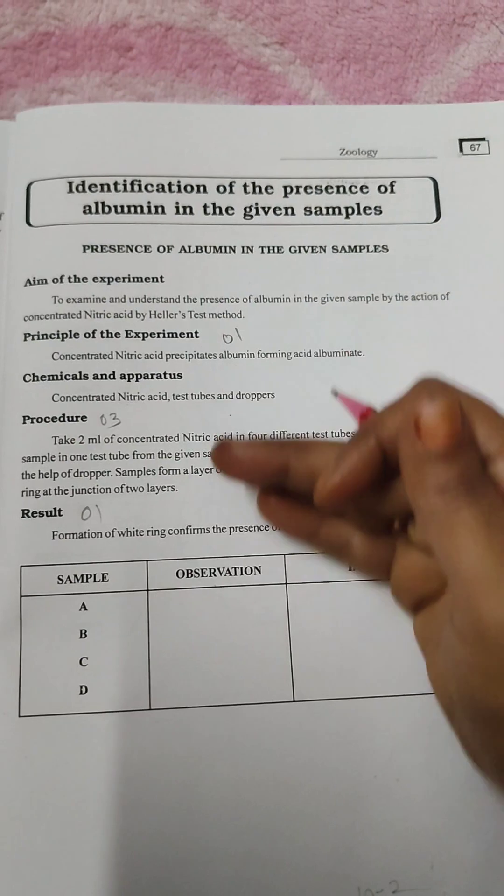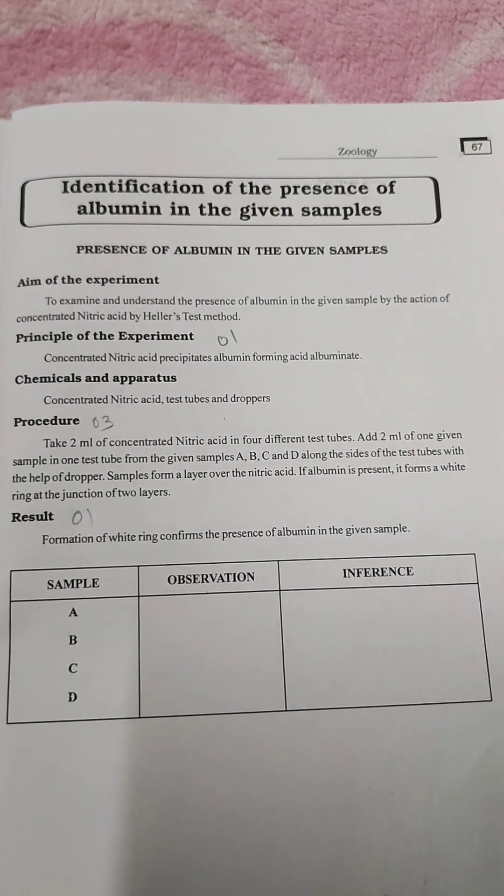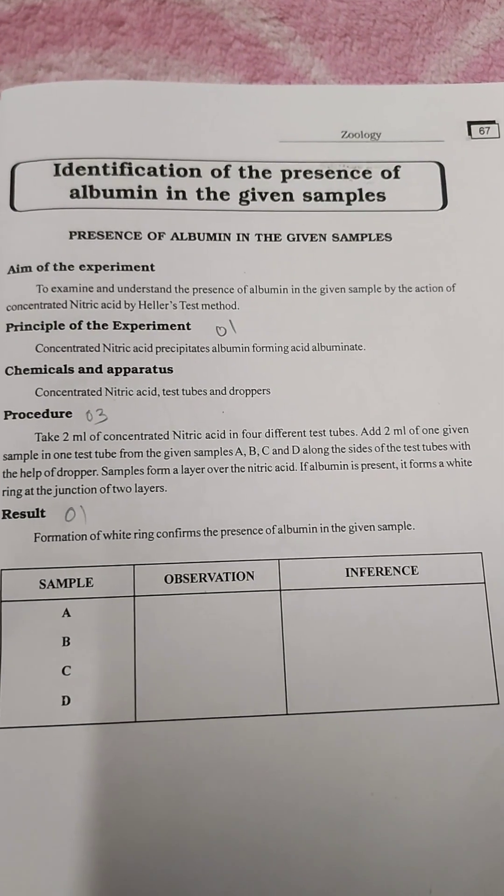Concentrate on all the headings we have to write in the external zoology practicals. Here the aim is the same: presence of albumin in the given sample.